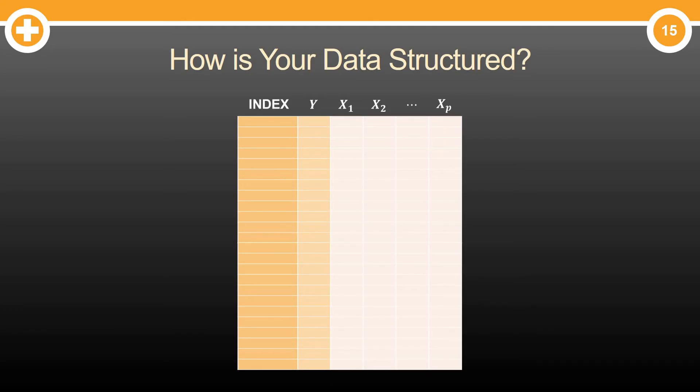Most likely, right before modeling, your data looks something like this. You have some indexing variable, as well as a variable of interest, we'll call it y, and a variety of other variables that may influence that variable of interest. We'll call them x1 through xp.